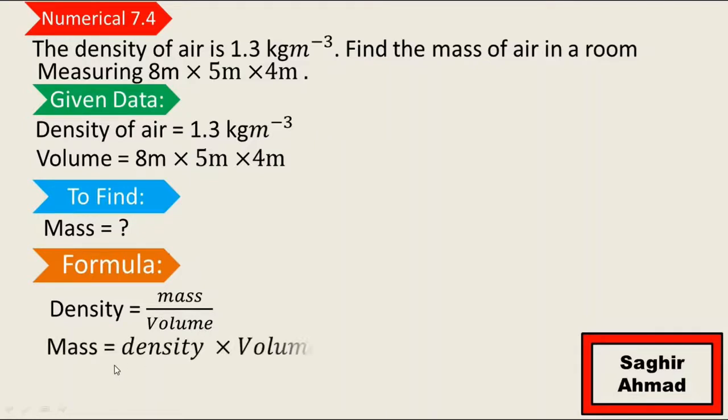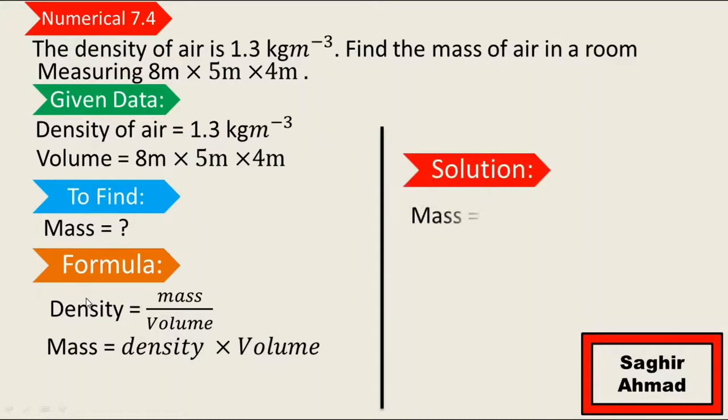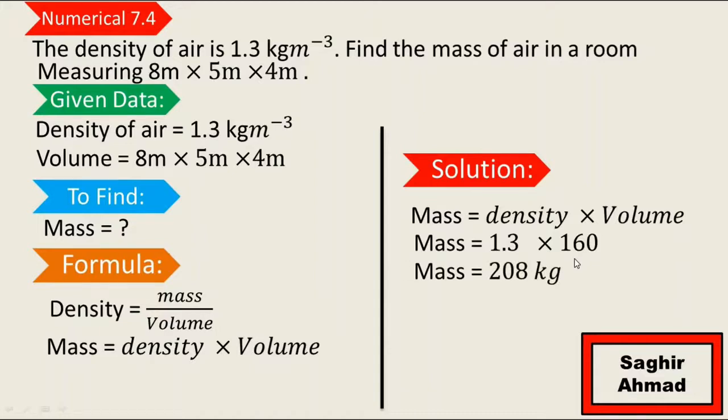Mass is equal to density times volume, which equals 1.3 times the volume. The volume is 8 multiplied by 5, which is 40, multiplied by 4, which equals 160. When we multiply 1.3 by 160, we get mass equals 208 kg.